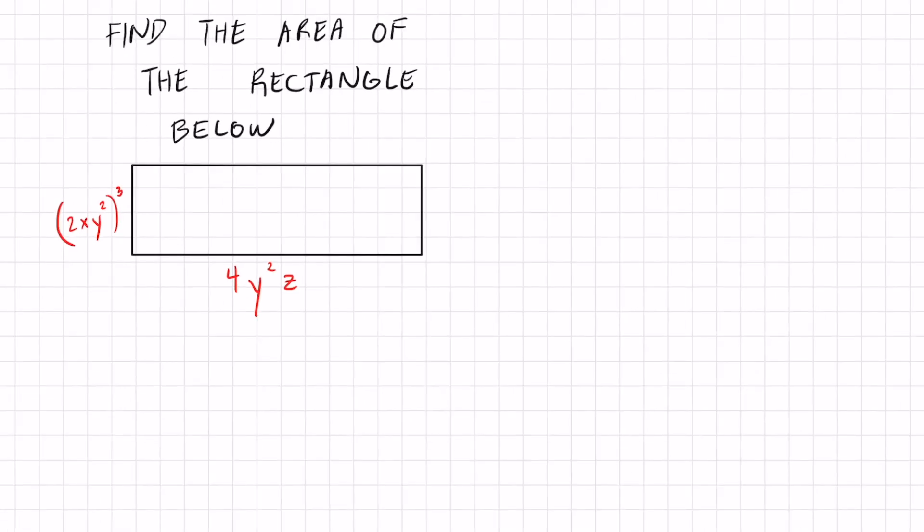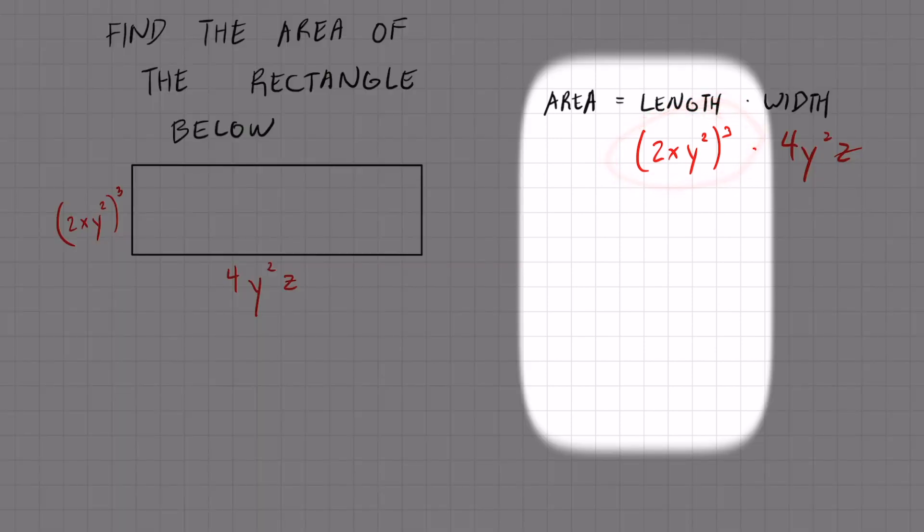Rectangle is similar to the square. A formula for a rectangle is length times width. So let's substitute all the dimensions we have. The length of this is 2xy squared to the third. I'm going to write that right below and my width is 4y squared z. I'm going to focus first on the length and simplify that before I try to multiply those two.